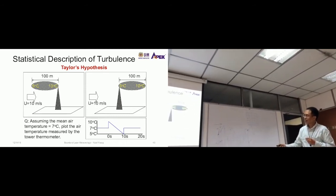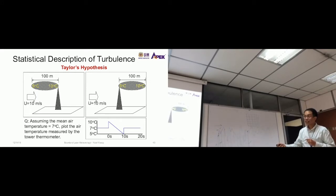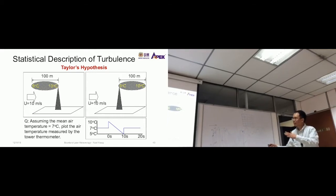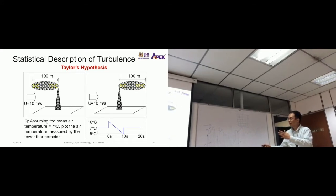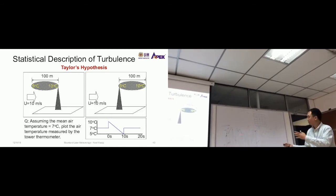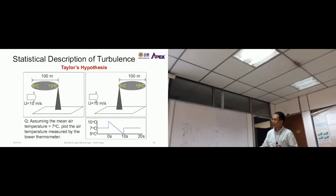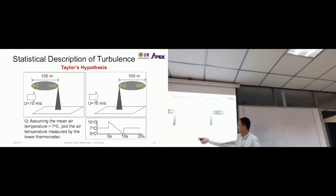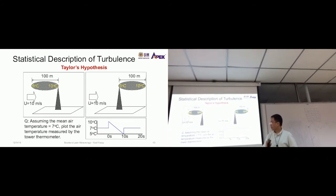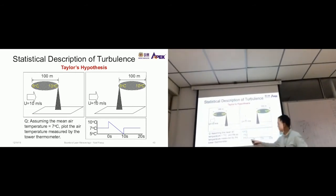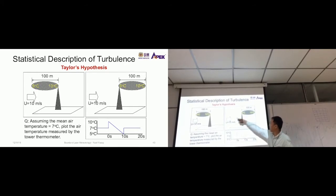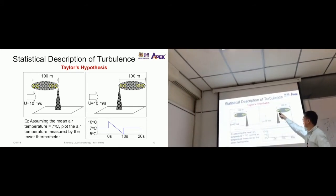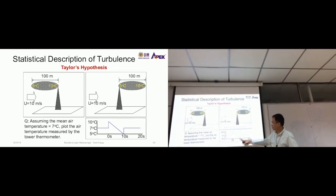This is an eddy, this is the sensor, and this is the wind carrying the eddy. This end of the eddy is 5 degrees Celsius, this end is 10 degrees Celsius, 100 meters apart. After a certain time this eddy would be here, carried by the wind, and then this thing will pick up 5 degrees Celsius, the one before something like this. So assuming the mean air temperature is 7 degrees Celsius, plot the air temperature measured by the tower thermometer. At zero seconds it's 10 degrees Celsius. After 10 seconds, this part of the eddy would move here, so it becomes 5 degrees Celsius. And then as it goes away, then 7 degrees Celsius again.